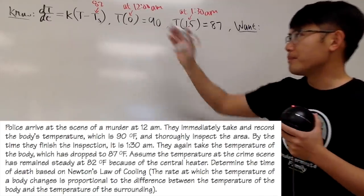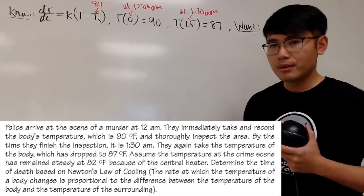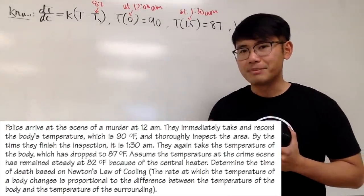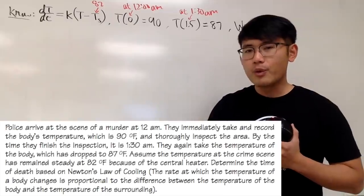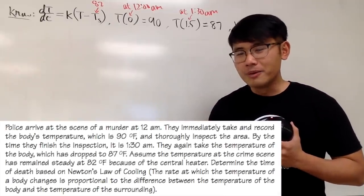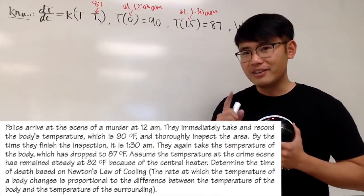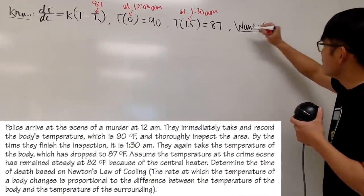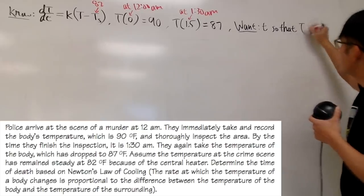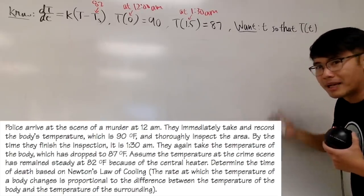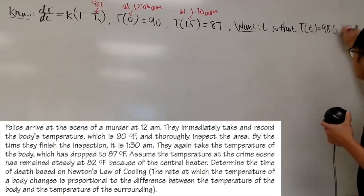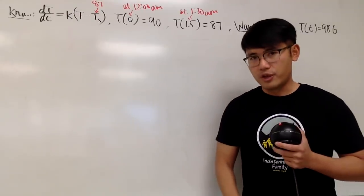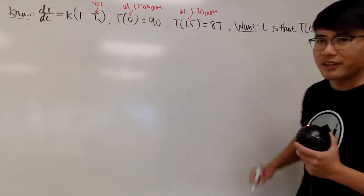You might wonder how come the temperature of the body has been dropping — because the person is dead, unfortunately. The moment the person has been murdered, his temperature is going to be dropping down. Usually the normal body temperature of a human being is 98.6 degrees Fahrenheit. So we want the time T such that the temperature at that time was still at the normal body temperature of 98.6 degrees Fahrenheit. Now let's go ahead and solve this differential equation.